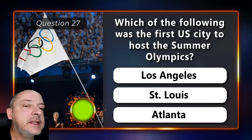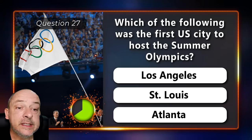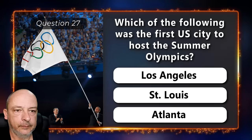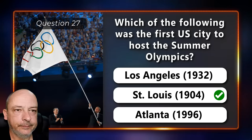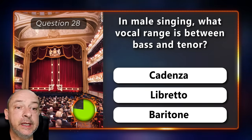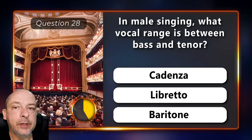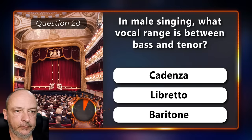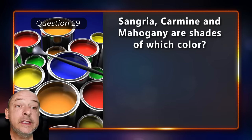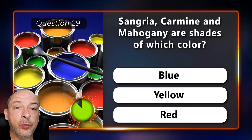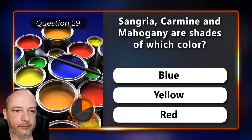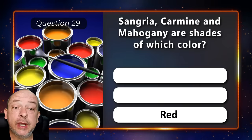Which of the following was the first U.S. city to host the Summer Olympics — Los Angeles, Saint Louis, or Atlanta? Saint Louis. In male singing, what vocal range is between bass and tenor — cadenza, libretto, or baritone? It is baritone. Sangria, carmine, and mahogany are shades of which color — blue, yellow, or red? They are shades of red.